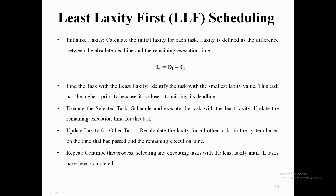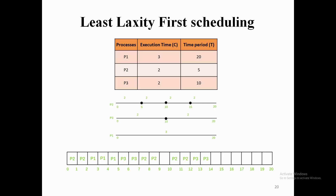D represents the deadline and C represents the capacity as given in the problem. First we will find out what D and C are from the problem, and we will find the difference between these two with respect to time T. Going through an example will make the process easier for us.